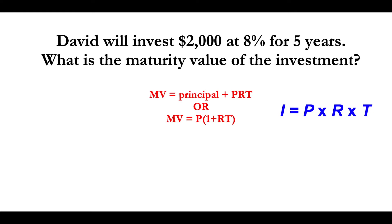Welcome back. In this video, we're going to learn how to find the maturity value of a loan. Maturity value is the total amount of money due at the end of a loan period. It is basically your principal amount plus interest. You can use either the first formula or the second formula to solve for maturity value.